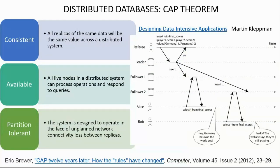Distributed database systems are envisioned very differently. The main design principle is called the CAP theorem. CAP is an acronym for Consistent, Available, and Partition Tolerant. Consistent here is different from the consistent in ACID — in ACID it means checking data types and uniqueness of keys, whereas here consistency means that all replicas of the same data should have the same value across the distributed system.